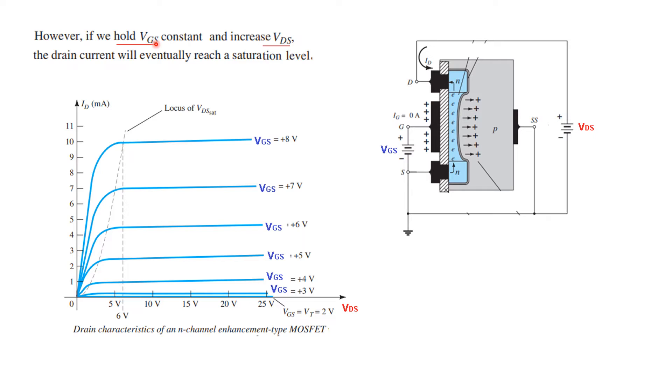However, if we hold VGS constant and increase VDS, the drain current will eventually reach a saturation level. So we can just select any one. Let's say I am selecting this one where the gate is now 6 volts here, and what we are increasing is the drain to source voltage. So this voltage we are increasing, this we are keeping fixed as 6 volts, and we are increasing VDS. So we follow this curve now. So initially the current is rising, rising, rising, but at some point it will now become constant. So this is the saturation level.